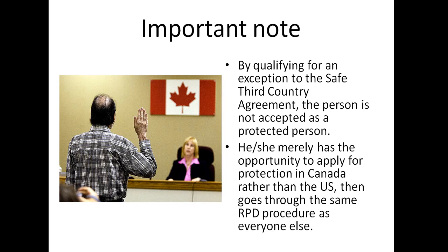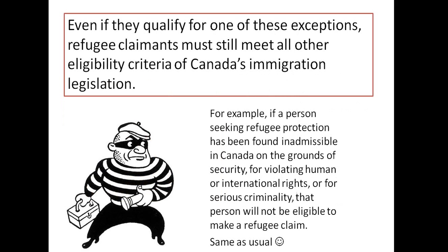Remember it's very important that they actually qualify under the regular person to protect stream, so you have to make sure they're not inadmissible in terms of criminality, Article 1E, 1F exclusions, and all of that. Even if they qualify for one of the exceptions, they have to meet the other criteria anyway — it's not automatic that they'll be given protected person status. Meeting an exception just means they can apply.